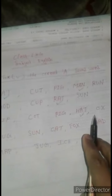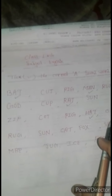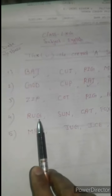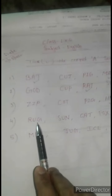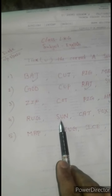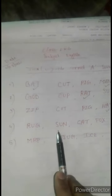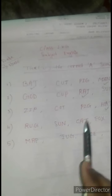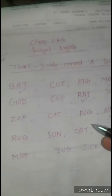O, X — Ox. Is this an A sound word? No, it is an O sound word. R, U, G — Rug, U sound word. S, U, N — Sun, U sound word. C, A, T — Cat. Is this an A sound word? Yes, it is an A sound word. Tick the A sound word.